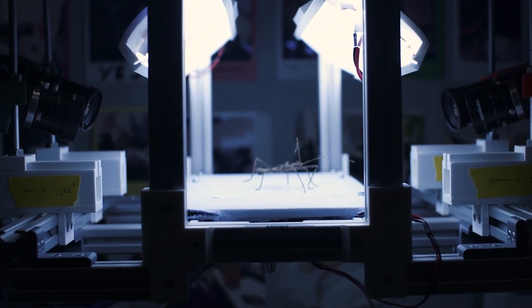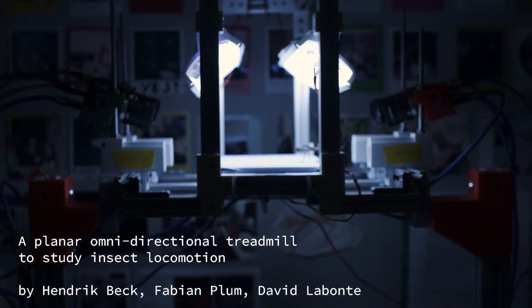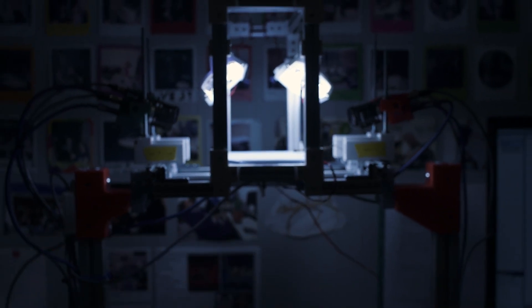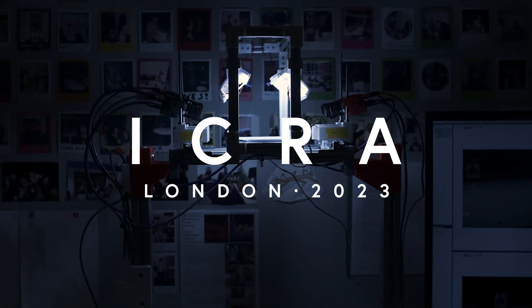The agility of insects has been a long-standing source of inspiration for robotics. They can run, climb or adapt to limb loss, all of which are desirable traits for six-legged robots.